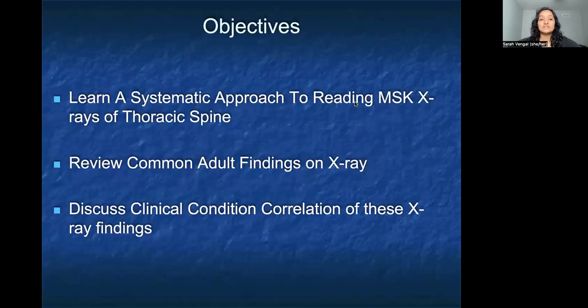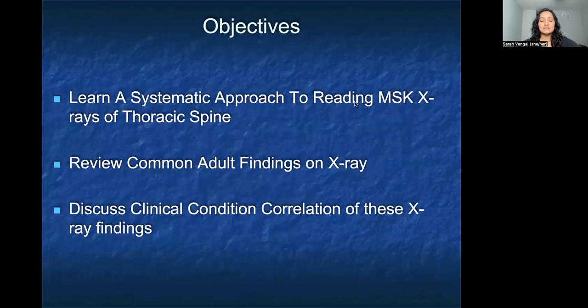Our objectives for today are to learn a systematic approach to reading MSK x-rays of the thoracic spine, to review common adult findings on x-ray, and to discuss clinical correlation of these x-ray findings.